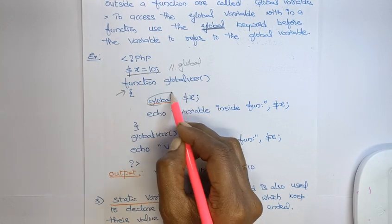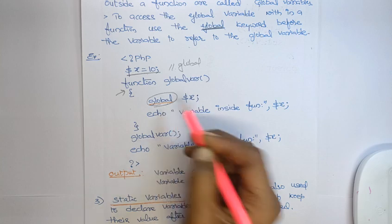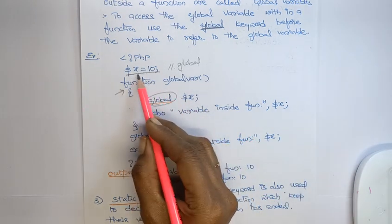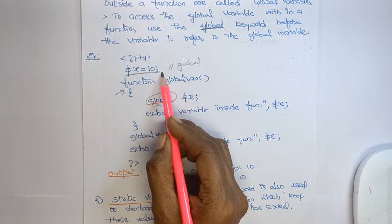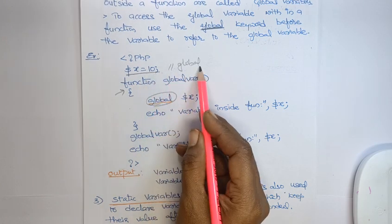So here, function. Dollar x is equal to 10, which is nothing but a global variable. I am outside of the function, means this is global variable.